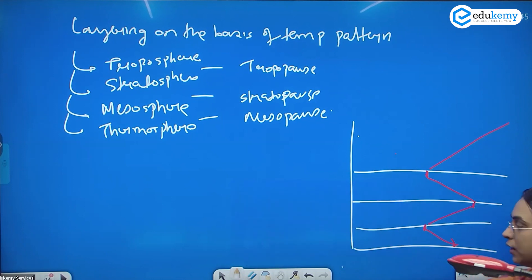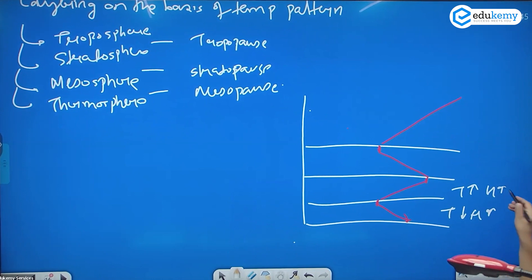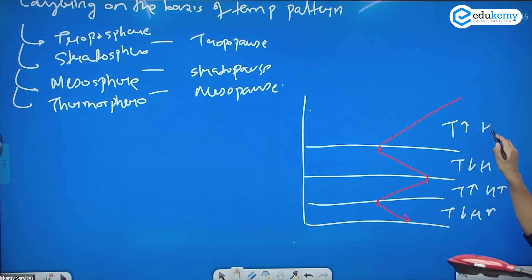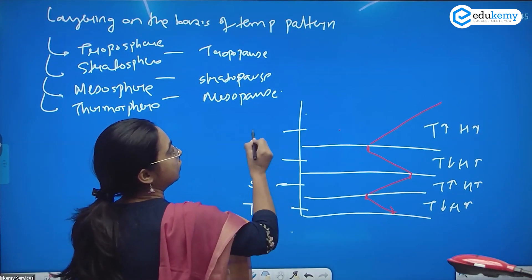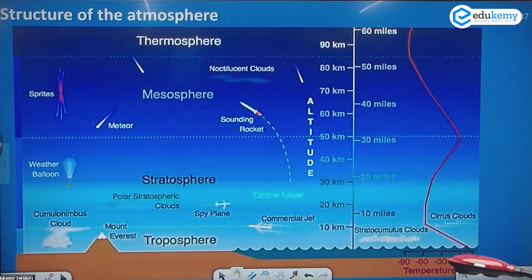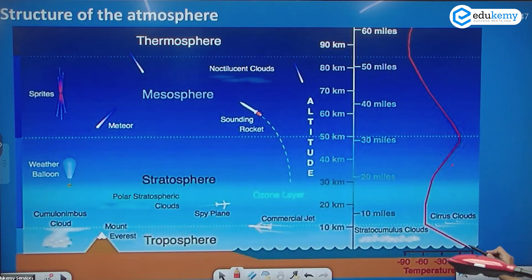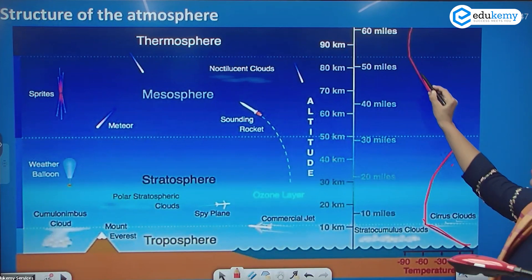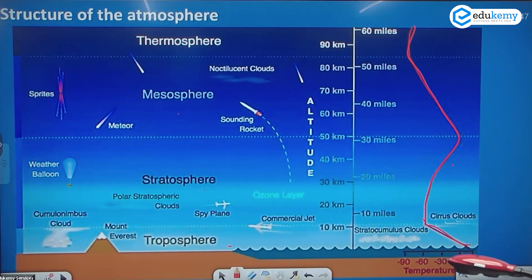In the troposphere, temperature is reducing with increase in height. In the stratosphere, temperature increases with increase in height. In the mesosphere, temperature further reduces with increase in height. And in the thermosphere, temperature increases again. This is troposphere, stratosphere, mesosphere, and thermosphere. You can look at this picture carefully — in the troposphere temperature is reducing, then increasing in stratosphere, then reducing in mesosphere, then increasing in thermosphere. You can also see the airplanes, the ozone layer, meteors, and noctilucent clouds. The coolest layer is the mesosphere.